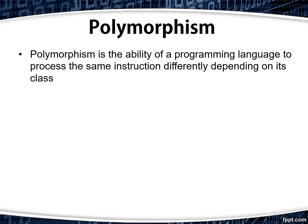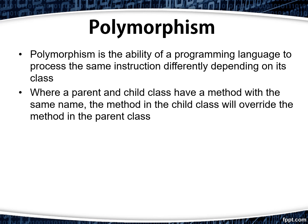Polymorphism is the ability of a programming language to process the same instruction differently depending on its class. Where a parent and a child class have a method with the same name, the method in the child class will override or take precedence over the method in the parent class. This is how we were able to previously override the constructor in our dog class.